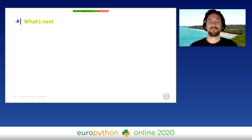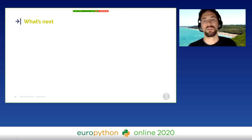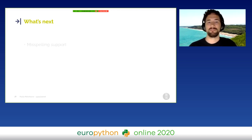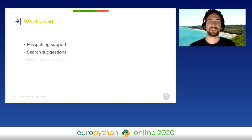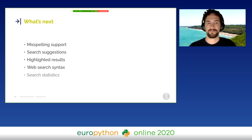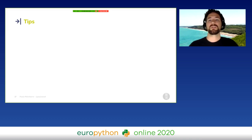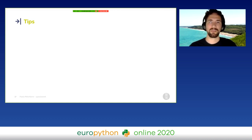New full-text search features are released every year in both Postgres and Django, and I want to add all of them to the Django website search. For example, misspelling support, search suggestions, highlighted results, web search syntax, and search statistics. But after that, I want to share some useful tips to learn more about full-text search and how to become an expert on it.